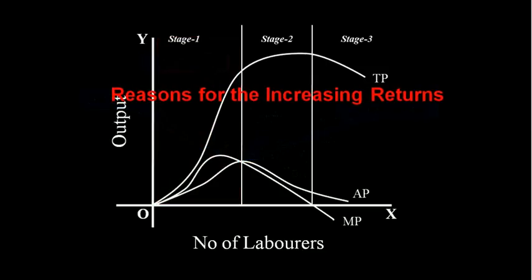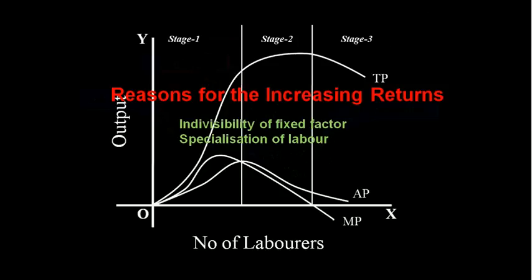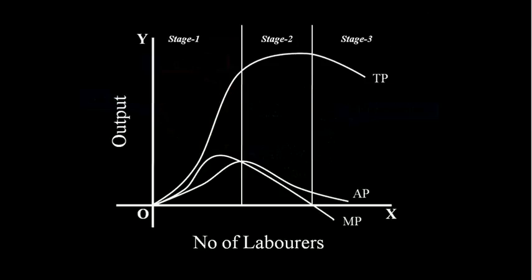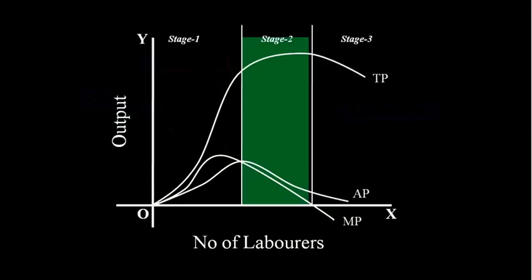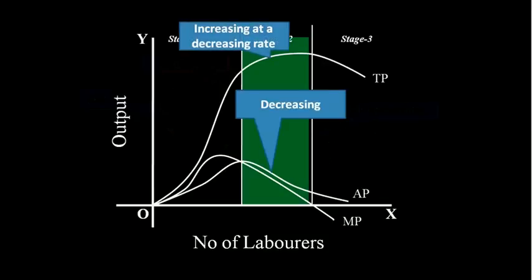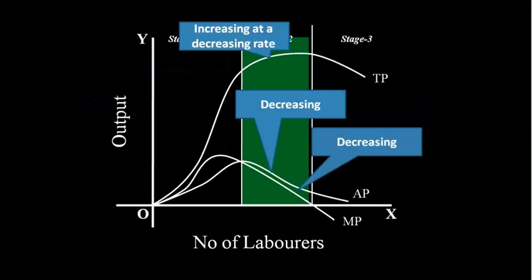Reasons for increasing returns: indivisibility of the fixed factor, and specialization of labor. Second stage: decreasing returns. Total product is increasing at a decreasing rate. Average product is decreasing. Marginal product is also decreasing and it becomes zero — the second stage ends here.